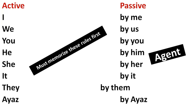Now the first rule of active and passive conversion is on your screen. Whatever conversions — the basic rule — you all should memorize it; it should be in your mind. If you don't remember this rule, you will face a little bit of a problem in active and passive.